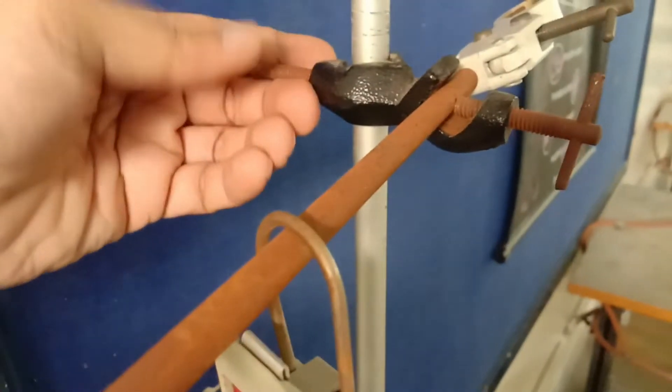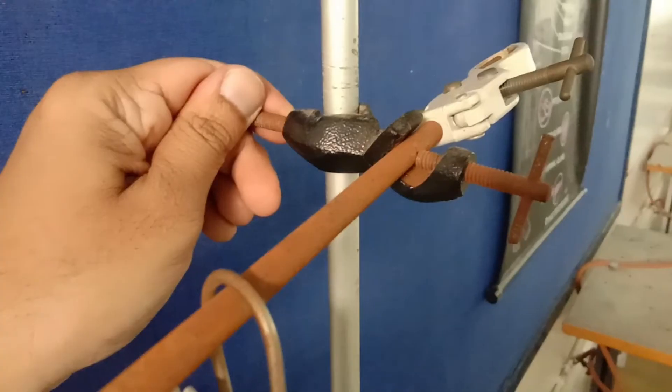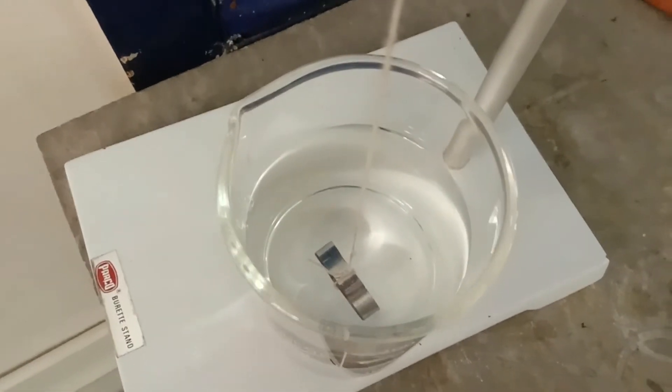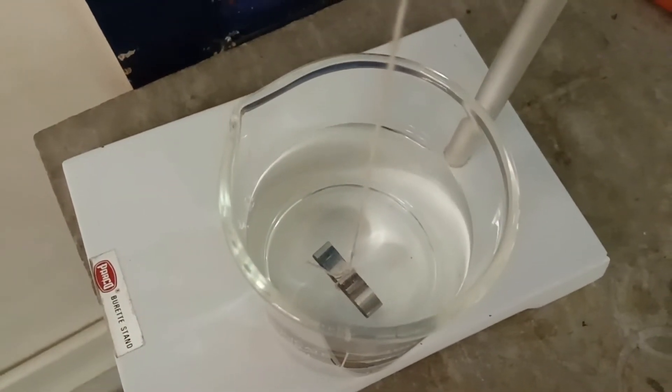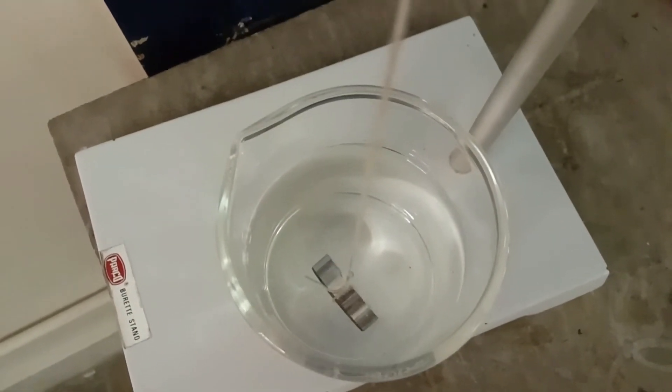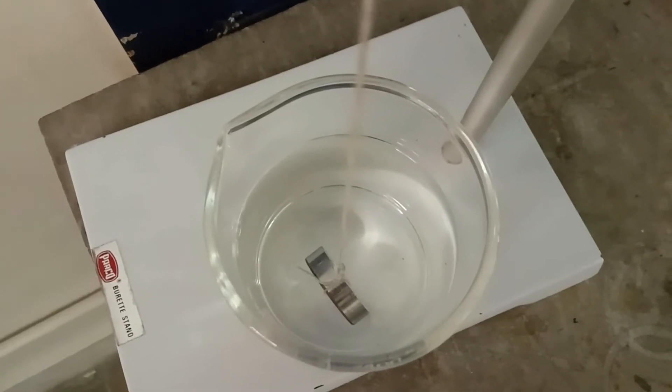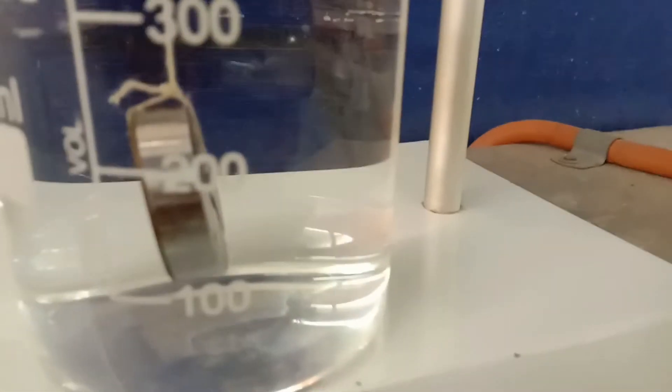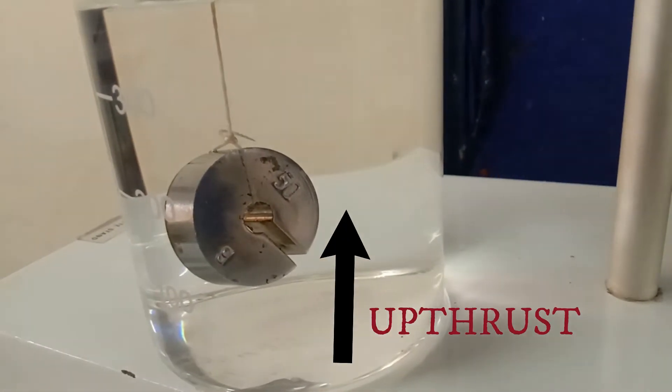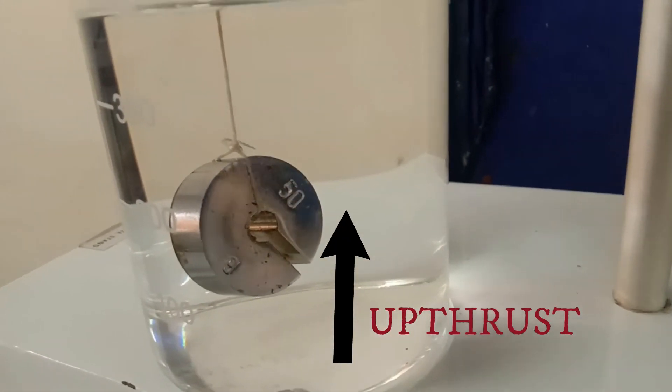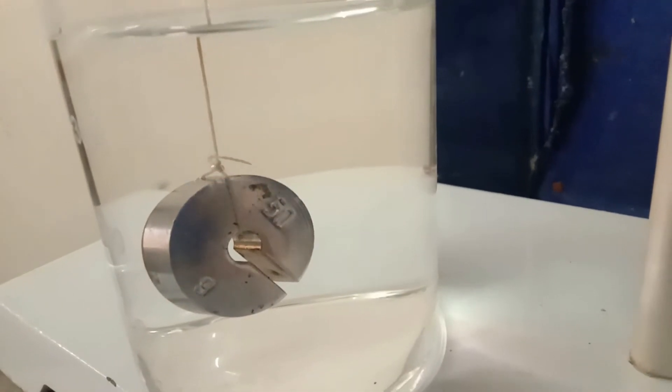Now, the object is completely immersed inside the water. So, you are supposed to make sure that this object should not touch the walls of the glass as well as it should not touch the base of the glass as well. Now, the upthrust is acting on it because the water is going to exert an upward force due to the pressure difference. Now, this upthrust is going to reduce the actual weight of the object in the air. So, you will see some amount of drop in the weight. It is also known as apparent weight.